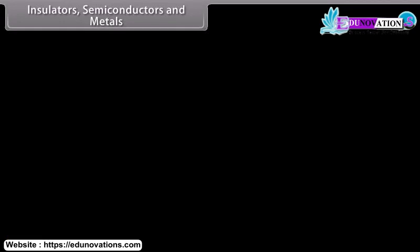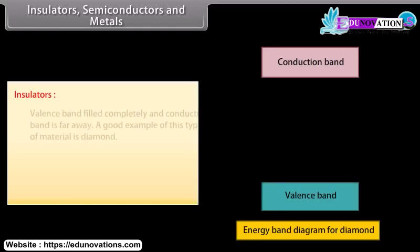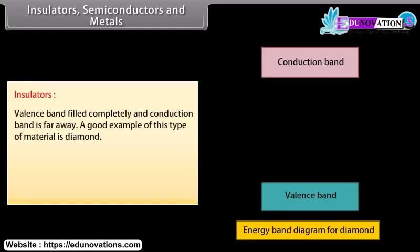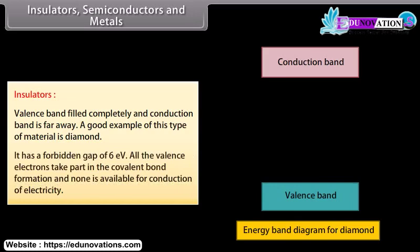On the basis of band theory of solids, solids are classified as insulators, semiconductors, and metals. For insulators, the valence band is filled completely and the conduction band is far away. A good example is diamond, which has a forbidden gap of 6 electron volts. All the valence electrons take part in covalent bond formation and none is available for conduction of electricity.